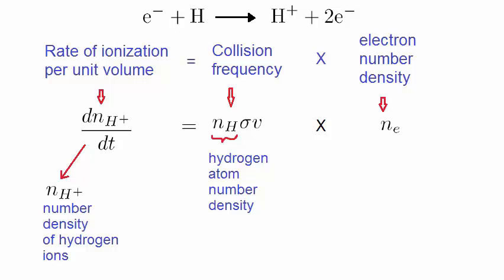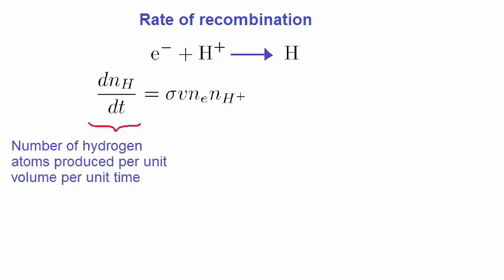We can also find out the rate of the reverse process, that is, the rate of recombination. It's given by this chemical equation, where on the left hand side is the electron undergoing a collision with a hydrogen ion. On the right hand side, we have the resulting neutral hydrogen atom. Again, we can rewrite this as a rate equation, dn/dt, just as we did for the ionization rate, except this is the reverse process. The left hand side is the number of hydrogen atoms produced per unit volume, per unit time. Note that sigma v n is the collision frequency. Quite often, sigma v is written as alpha, and is known as the recombination coefficient.